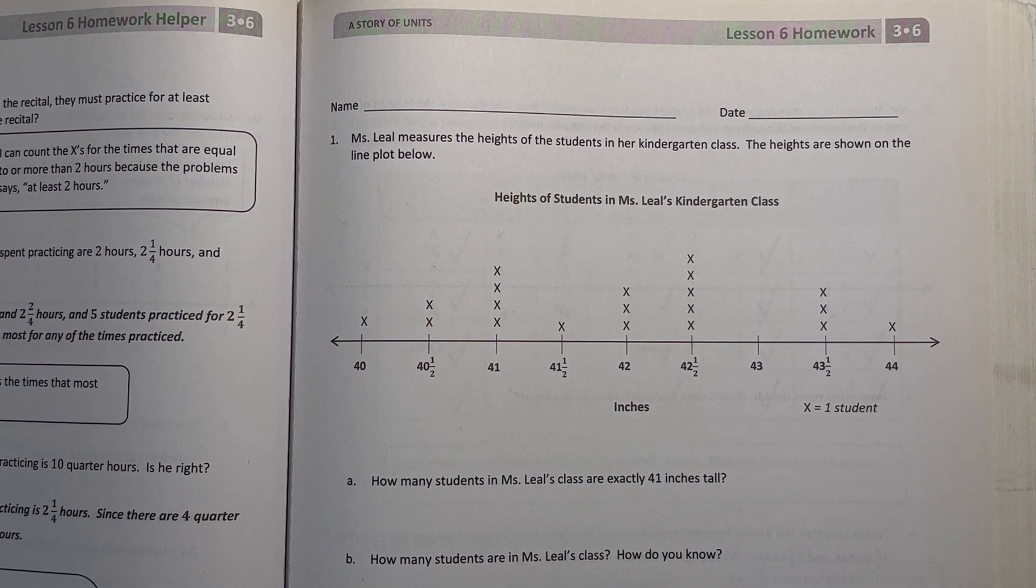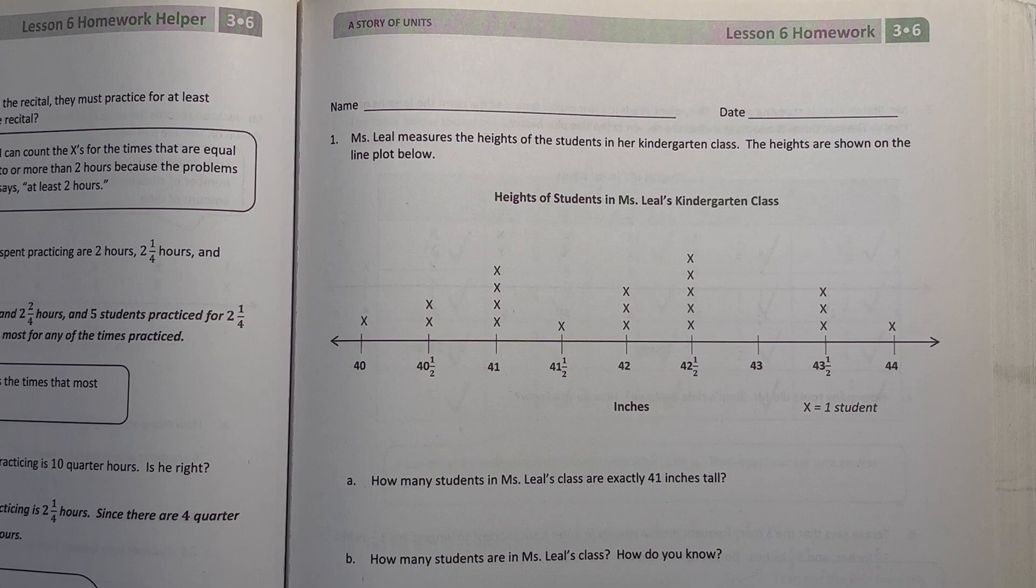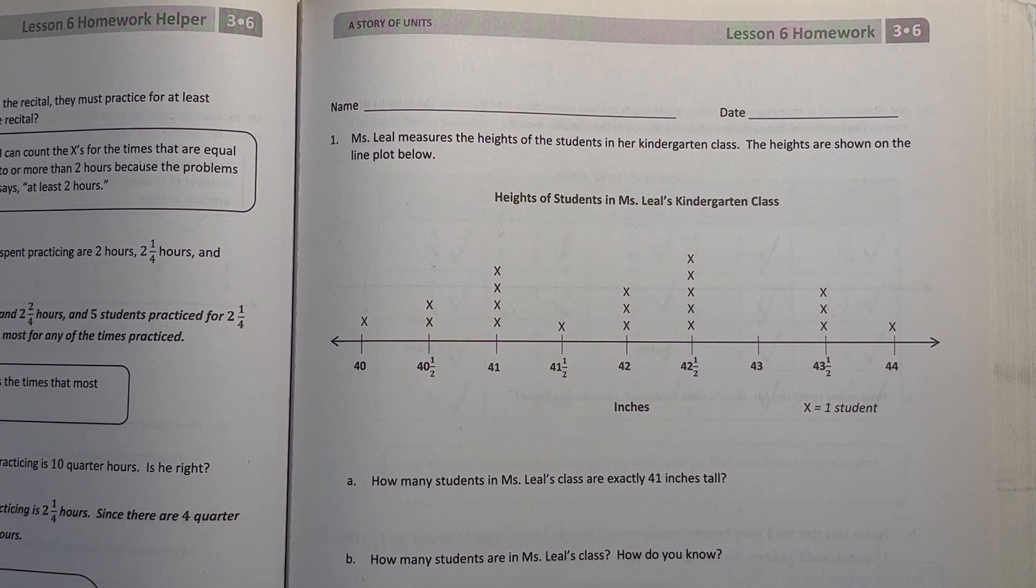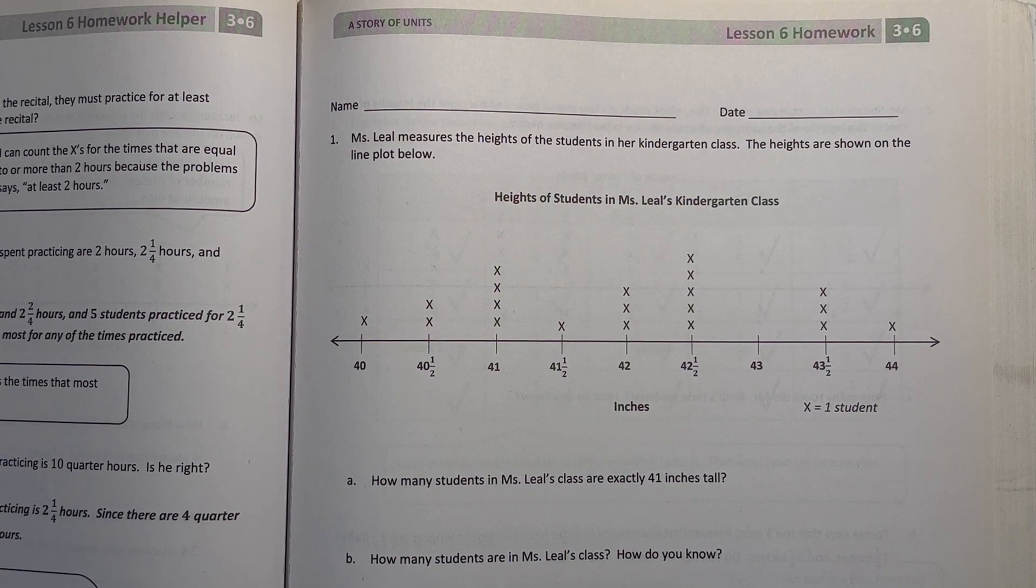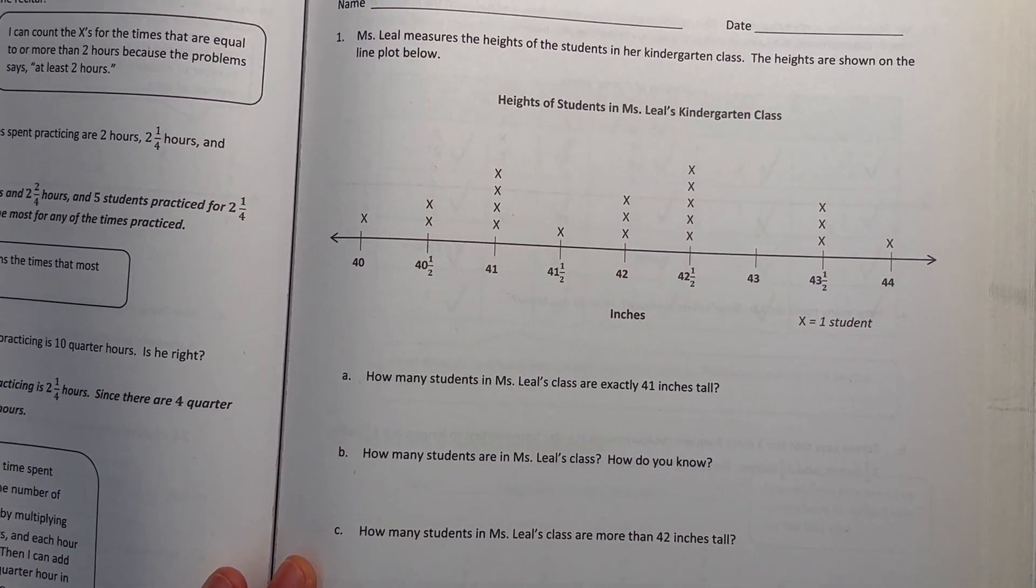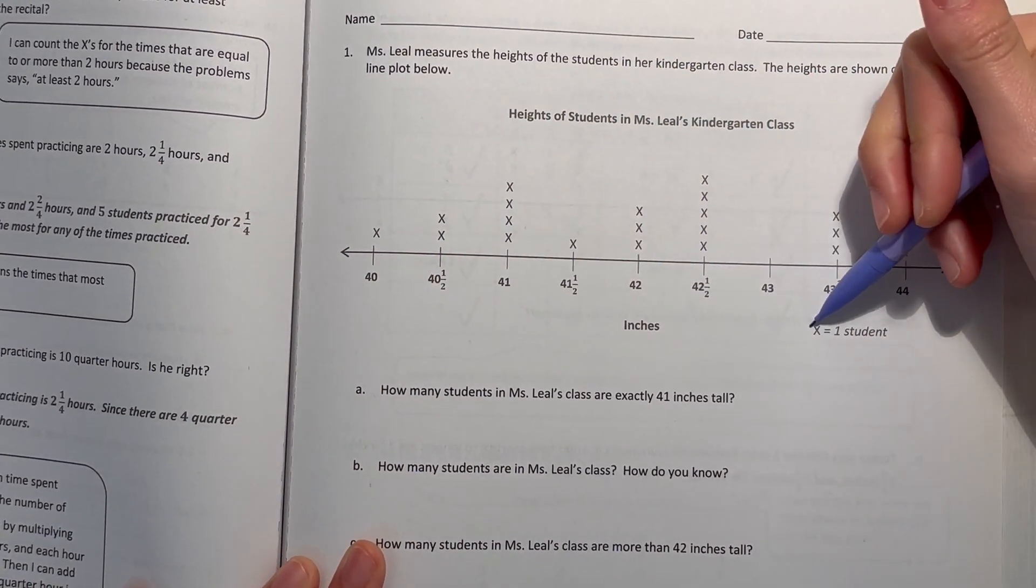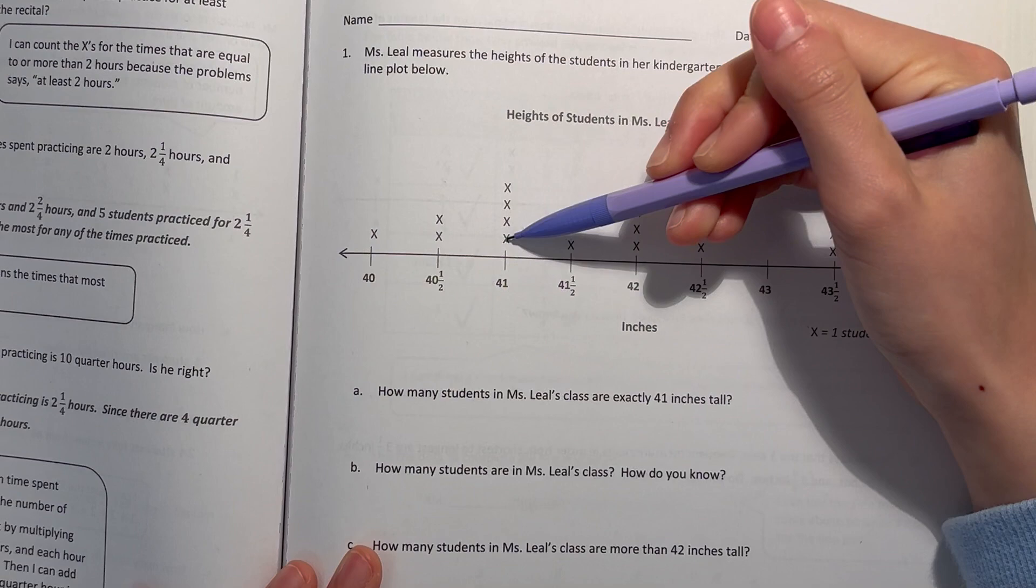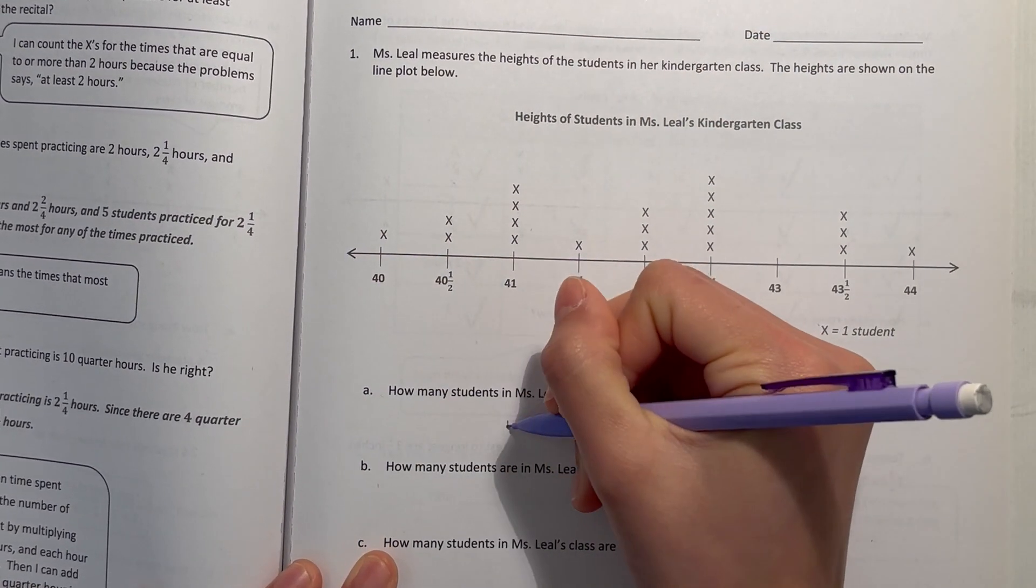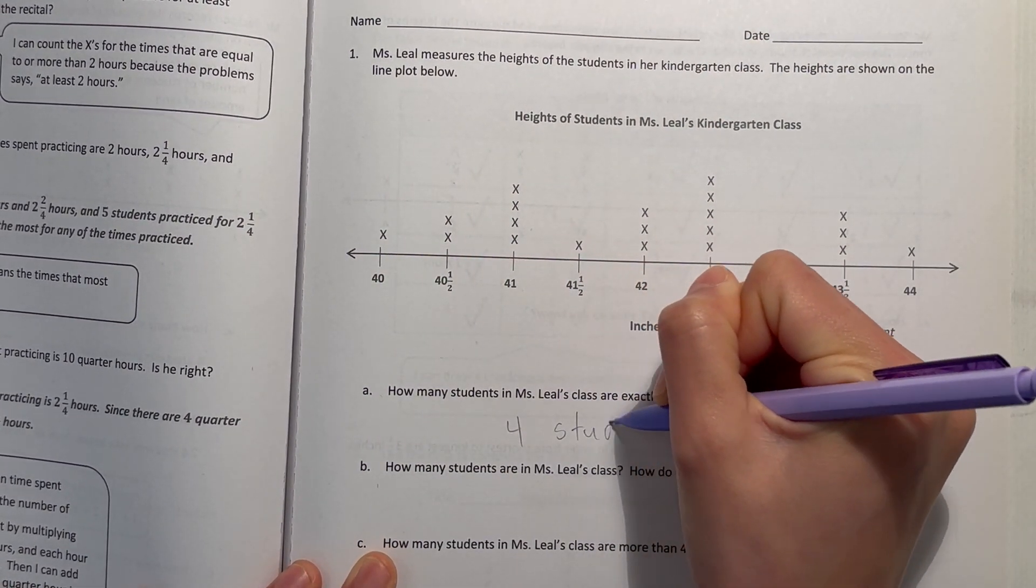Number 1, Ms. Leal measures the heights of the students in her kindergarten class. The heights are shown on the line plot below. So how many students in Ms. Leal's class are exactly 41 inches tall? So I find 41 and each x is one student. So that's one, two, three, four. Four students.